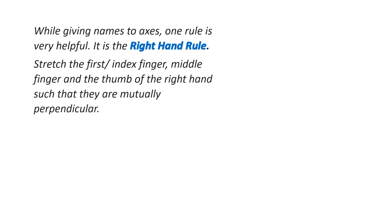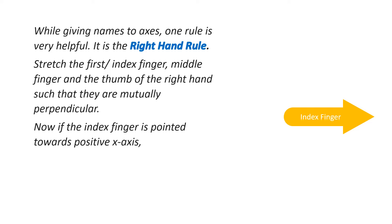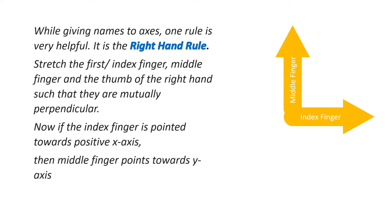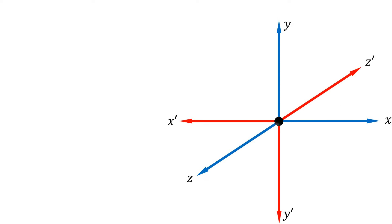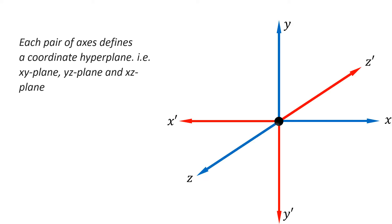For the right-hand rule, stretch the index finger, middle finger, and thumb of the right hand so they are mutually perpendicular. If the index finger points toward the positive x-axis, then the middle finger points toward the y-axis and the thumb points toward the z-axis. Each pair of axes defines a coordinate hyperplane: the x-y plane, y-z plane, and x-z plane.